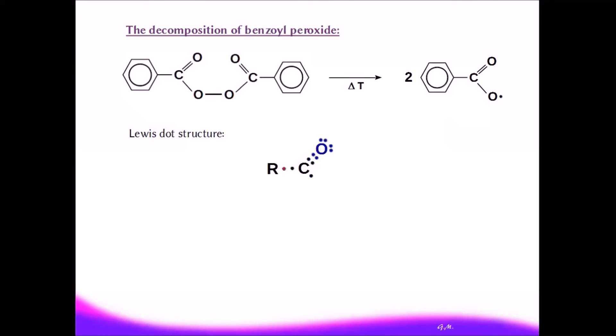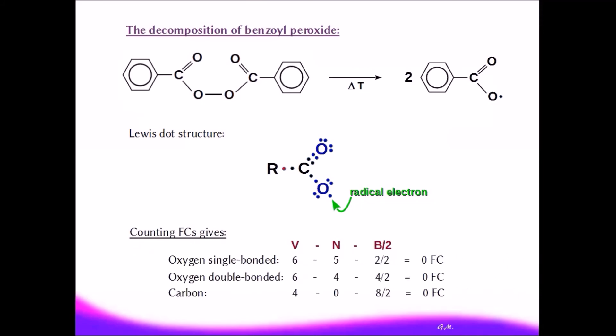Adding the oxygens, we see that one forms a double bond, whereas the other forms only a single bond, with one radical electron remaining on the oxygen atom. Formal charge calculation gives zero for all the atoms. And although the octet rule is not obeyed for all atoms, this is the correct structure.